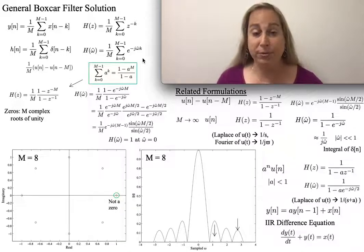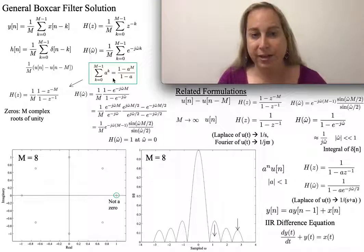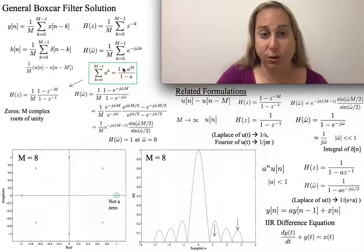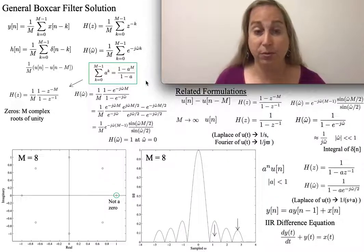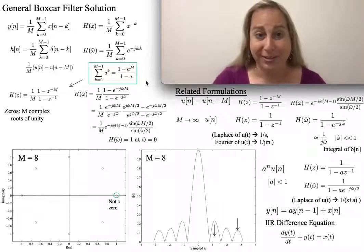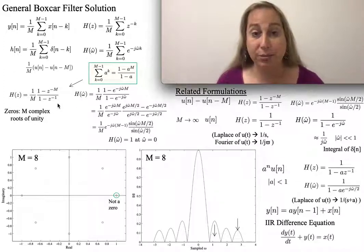You might remember an interesting identity that says if I have a sum of terms to a given power, I can actually write the expression, assuming the series converges, as 1 minus A to the M terms over 1 minus A. This is quite useful here because it gives me an H(z) and an H(j omega) and H of frequency that are quite reasonable to work with.